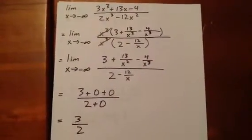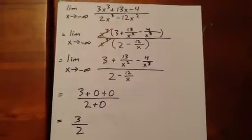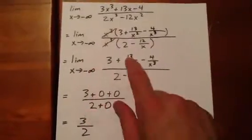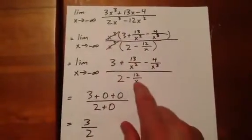After factoring out those x cubed as shown in green, we can cross them out as shown in red in the second step. And we then have the limit as x goes to negative infinity of this quantity.